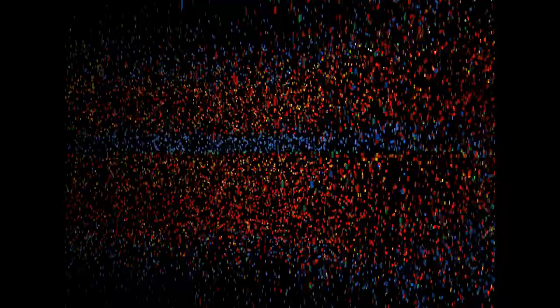In 1911, Ernest Rutherford, a student of J.J. Thomson at the University of Manchester in England, demonstrated that an atom has a nucleus — a center — but that most of the atom is empty space. Rutherford shot positive particles called alpha particles, which are effectively the nucleus of a helium atom with two protons and two neutrons, at a thin sheet of gold foil. If Thomson had been correct that atoms were solid, the alpha particles would have shown a small deflection. In fact, most showed no deflection, and some actually bounced back, indicating a solid nucleus surrounded by a lot of empty space.